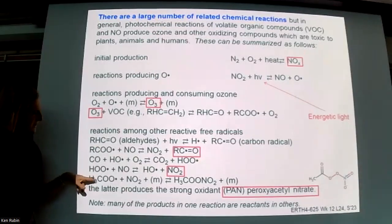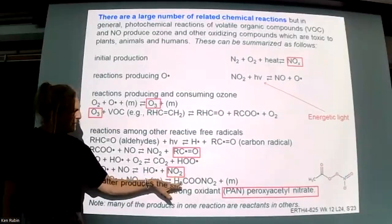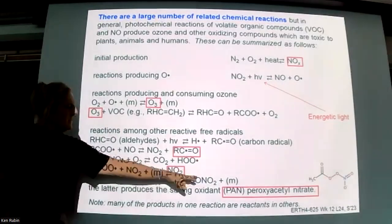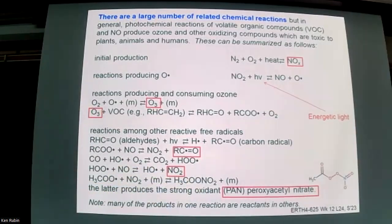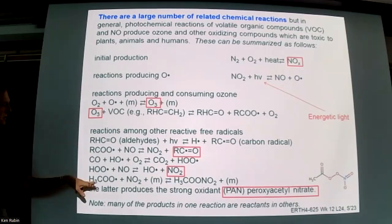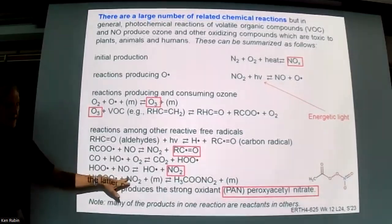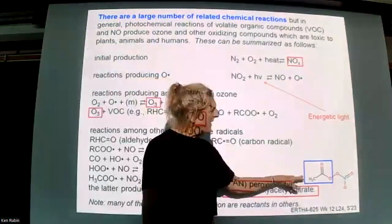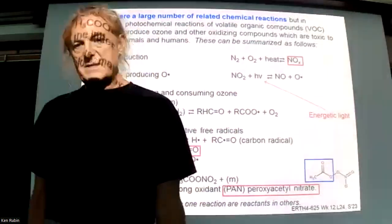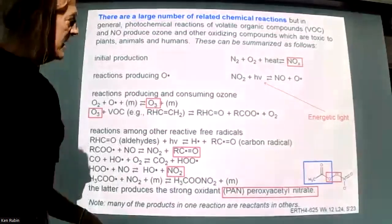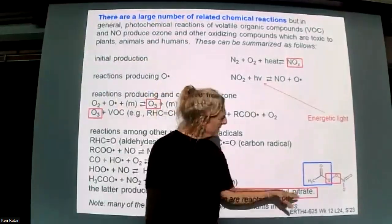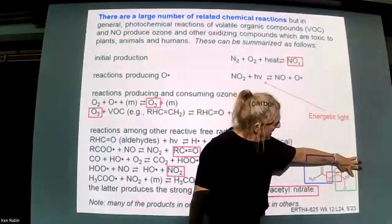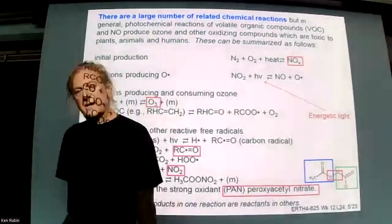Among other smog reactions is the formation of peroxyacetyl nitrate, or PAN: CH3COO-NO2. It's like a carboxylic acid with a nitrate group. The name breaks down as: the acetyl part (like acetic acid), the peroxyl part (the O-O oxygen bond making it a peroxide), and the nitrate (NO3 replacing a hydrogen). This is one of the strongest irritants in smog, formed from the acetyl radical reacting with NO2.